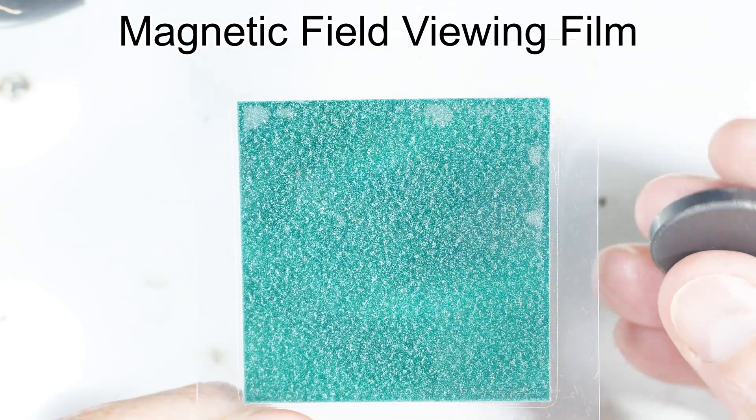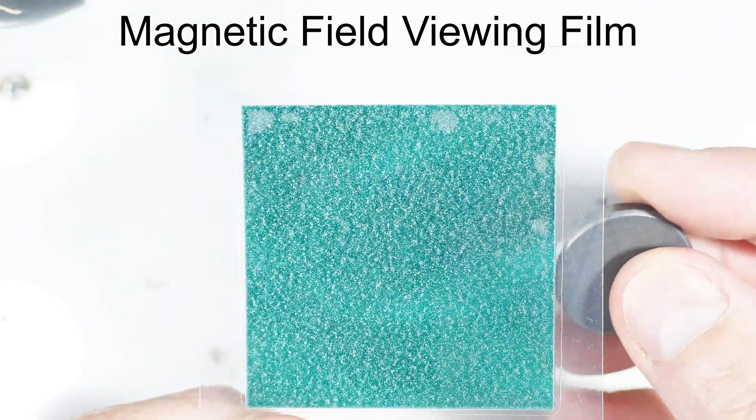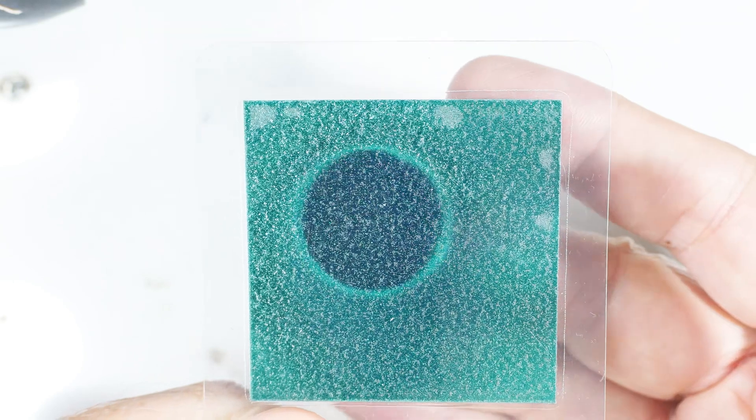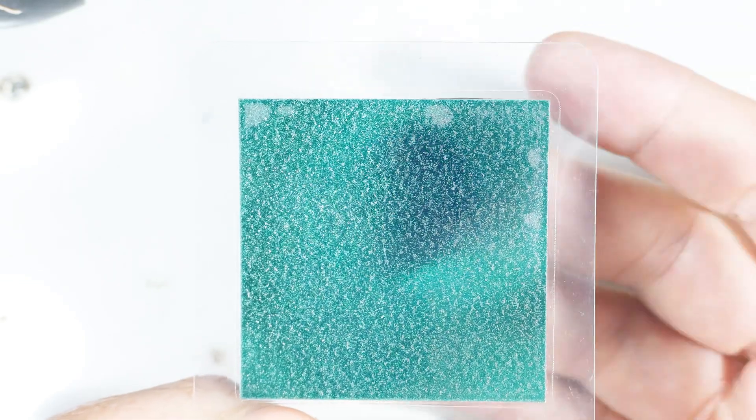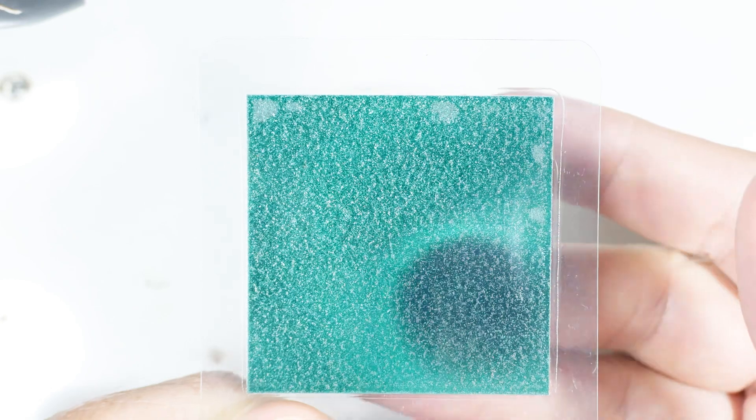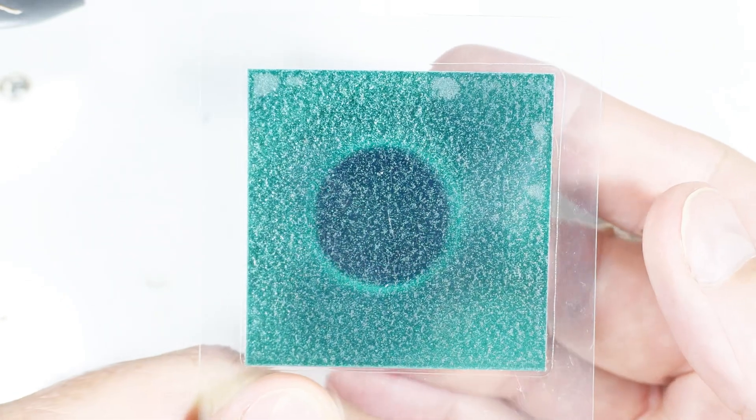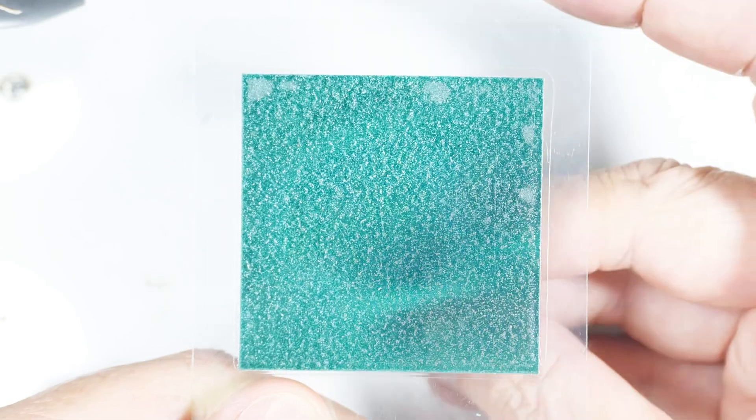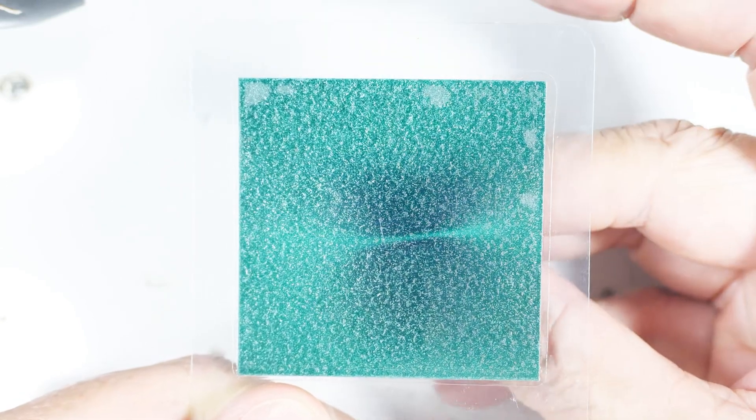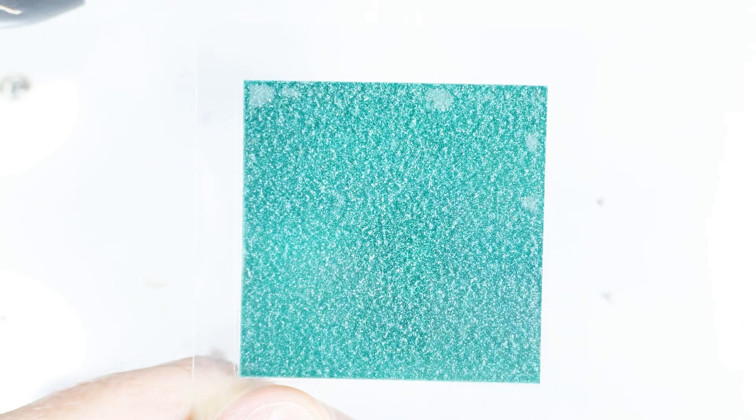Now this magnet is north and south on the flat ends. So this is one of the ends, I don't know whether it's north or south, and this is the other one. And you can just see the white line around there and you can see the field lines forming.